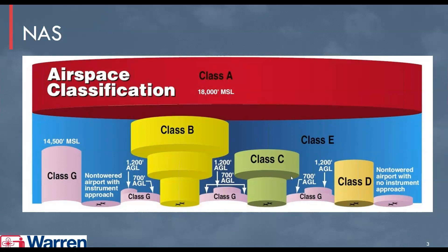There is also Class C airspace. Near us, this might be represented by Allentown Airport in the Pennsylvania area near Warren County Community College. Class C airspace is still high-level, congested commercial airspace, but not as congested as Class B and may only have two layers in the upside-down wedding cake. Class D is also airspace controlled by the FAA with an airport — you can notice it by the runway on the ground — but it's more like a cylinder. There are some standard sizes for Class D, but there's no second or third layer like Class B.